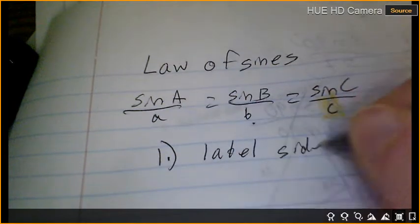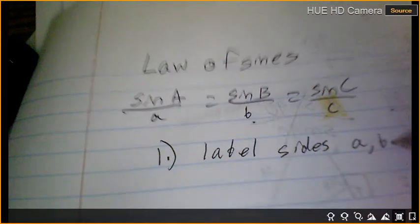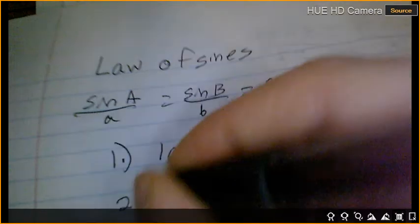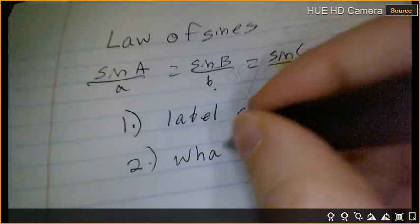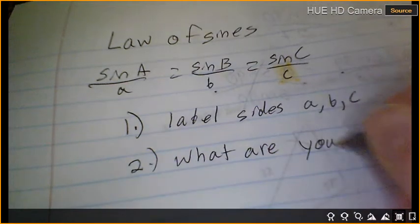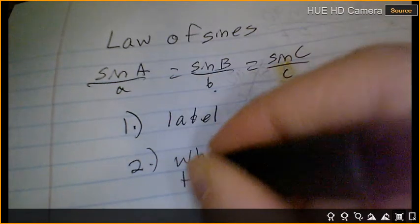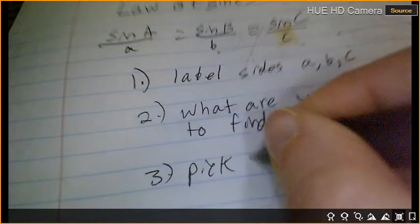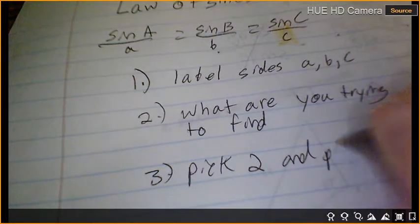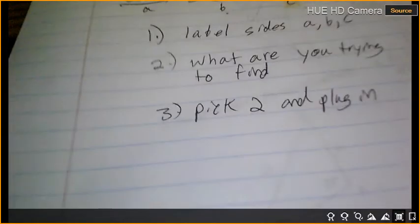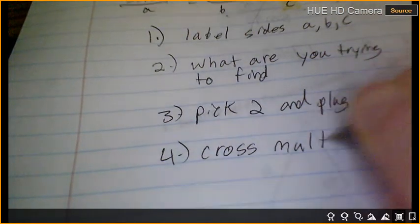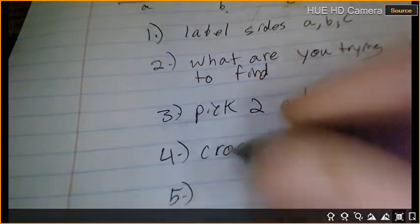Equals sine b over little b equals sine c over little c. Okay, now I'm going to have step one. Label sides A, B, C. Okay. Two. What are you trying to find? Okay. Three. Pick two from above and plug in. Four. Cross multiply. Five. Divide.